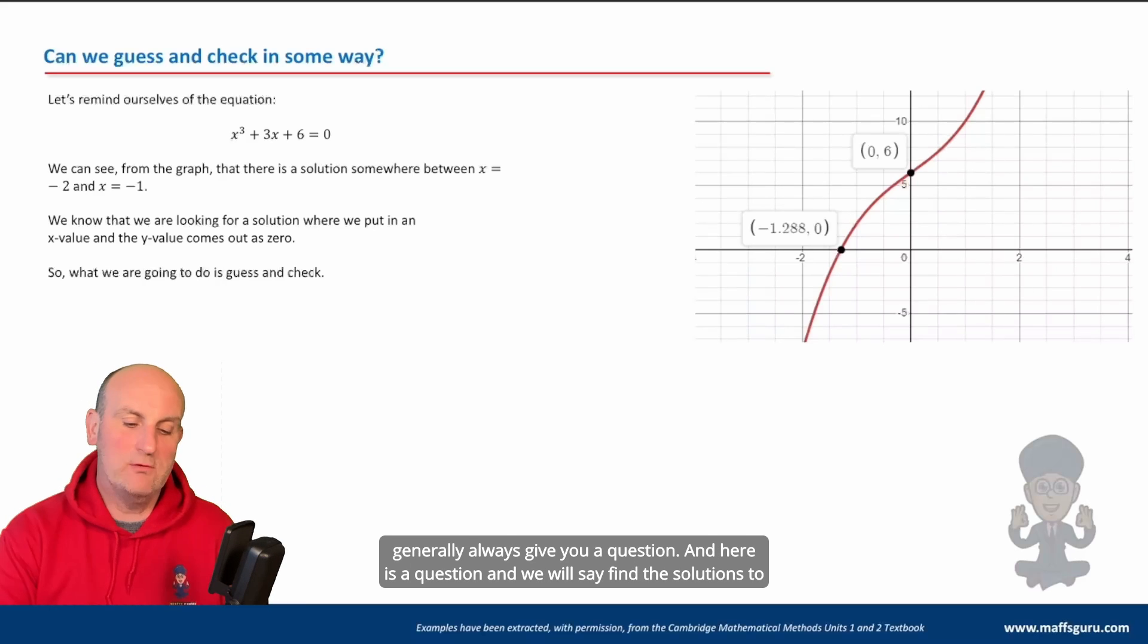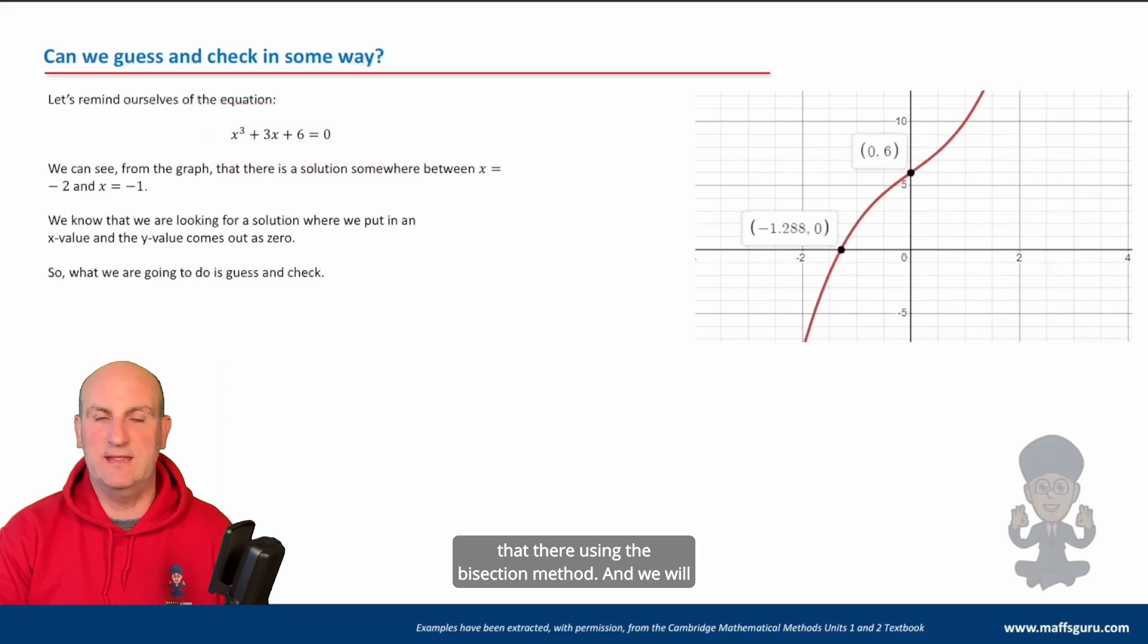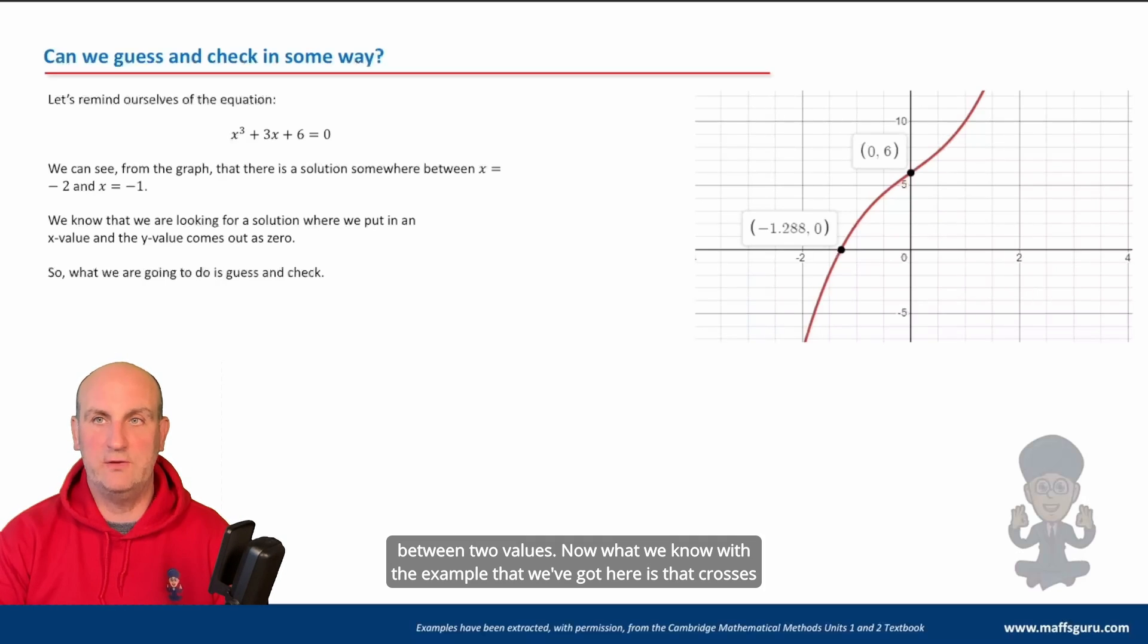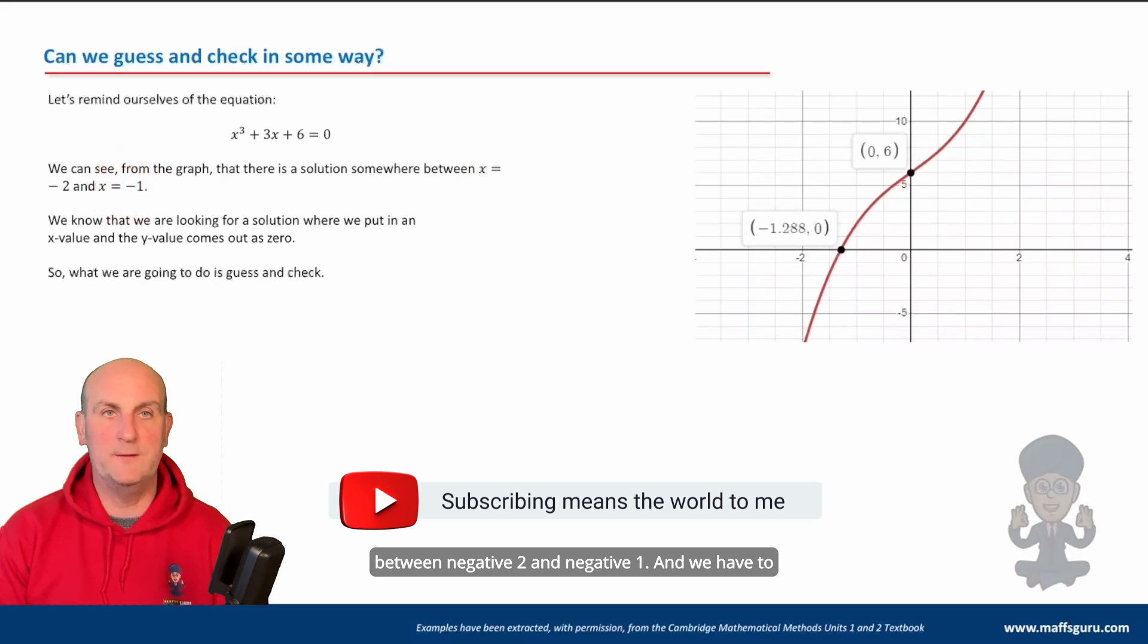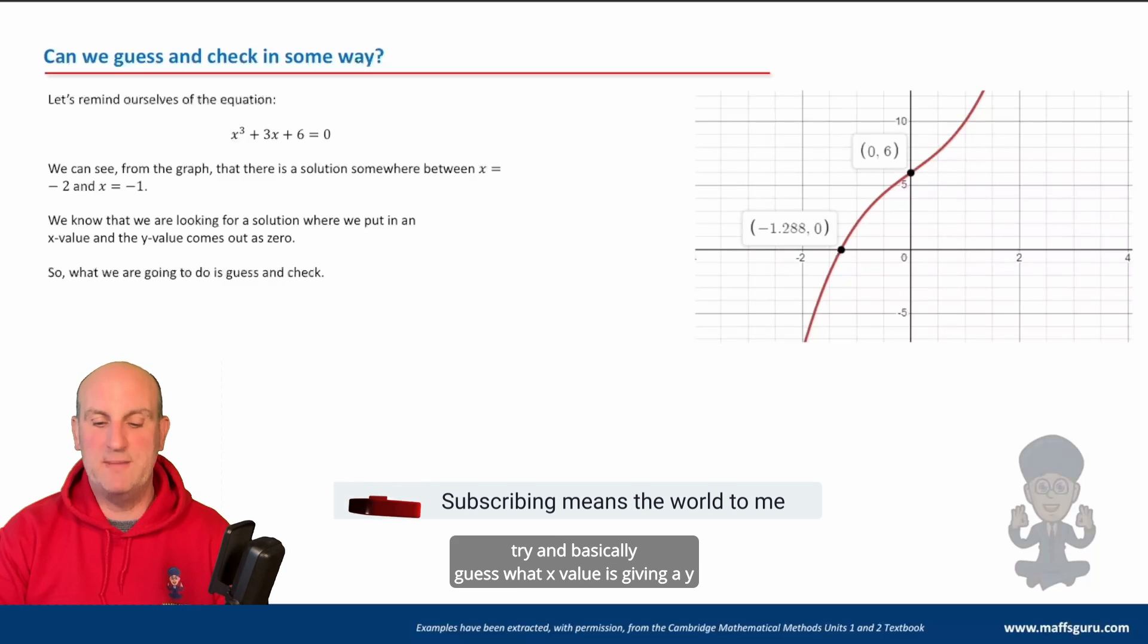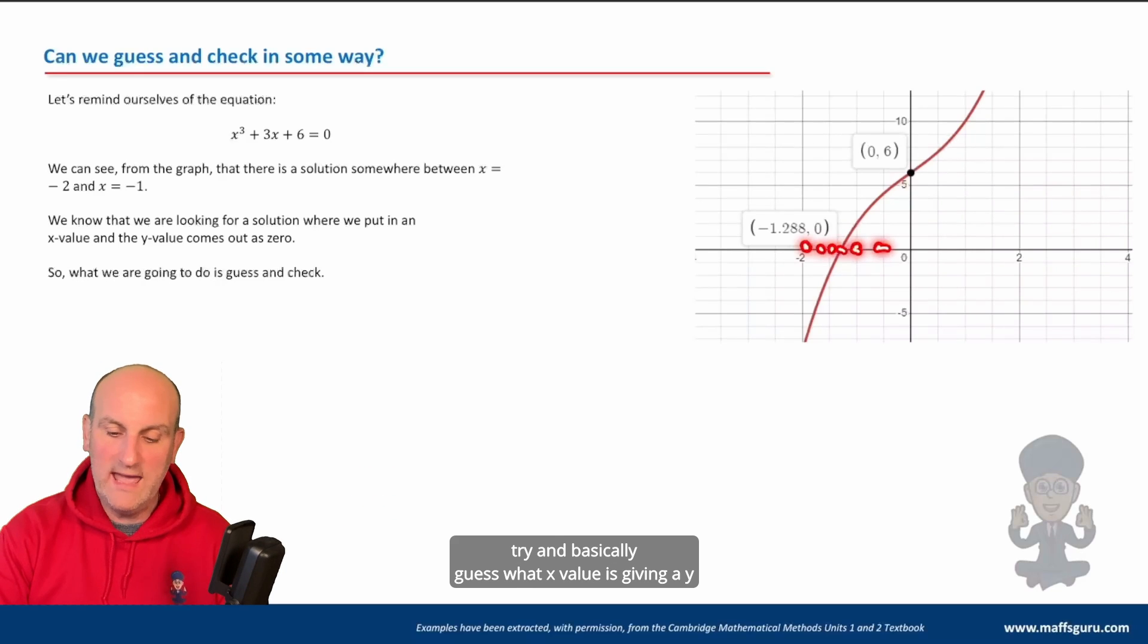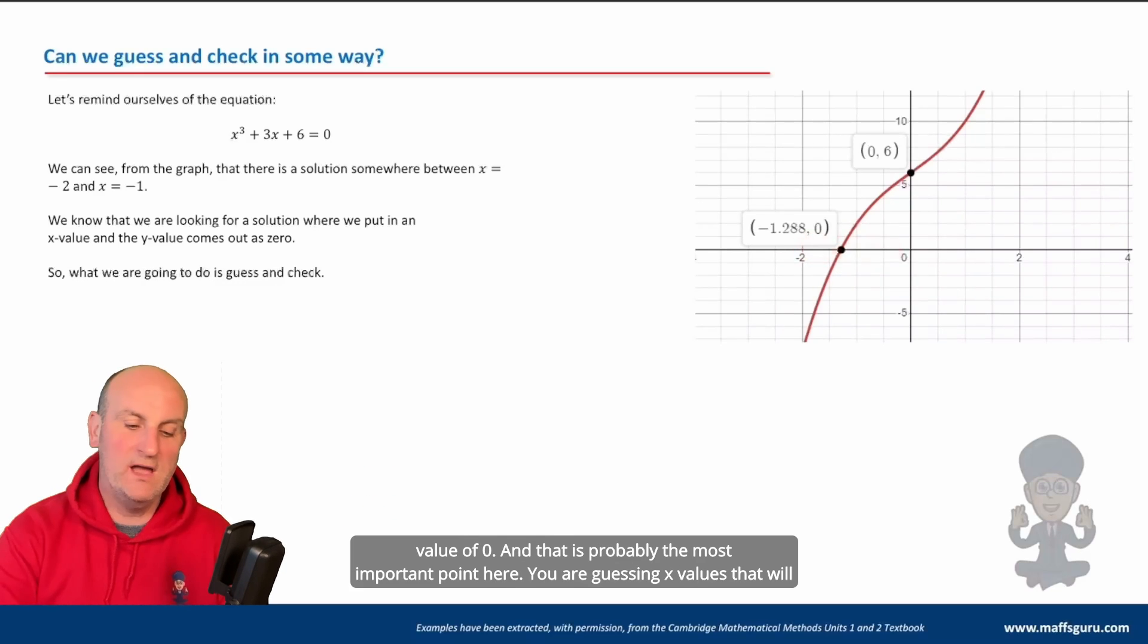We will generally always give you a question, and we will say find the solutions using the bisection method. And we will have to tell you that there is a solution somewhere between two values. Now what we know with the example that we've got here is that it crosses somewhere between negative two and negative one. So the question will tell you that there is a solution between negative two and negative one. And we have to try and basically guess what x value is giving a y value of zero.